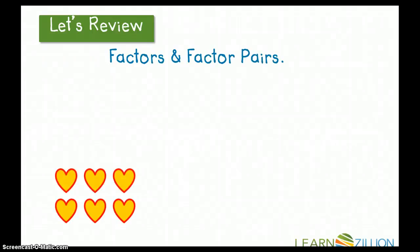Let's review factors and factor pairs. If I have six hearts here, I have a group of six, I have two groups of three, and I could write this as two times three equals six because I have two groups of three hearts each. If I have two groups of three, I know I have one, two, three, four, five, six.